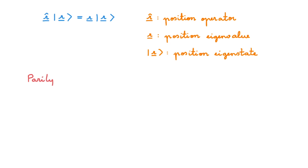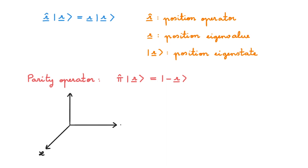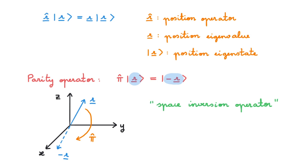We're now ready to define the parity operator. We label it with the symbol pi hat, and define it by its action on the position eigenstates, by setting this equal to the eigenstate minus r. To understand what the parity operator is doing, let's draw a set of Cartesian coordinate axes. If the vector r is the position eigenvalue of state r, then the application of the parity operator generates a new state minus r, whose eigenvalue is the vector minus r, obtained by a reflection about the origin of coordinates. For this reason, the parity operator can also be called the space inversion operator.